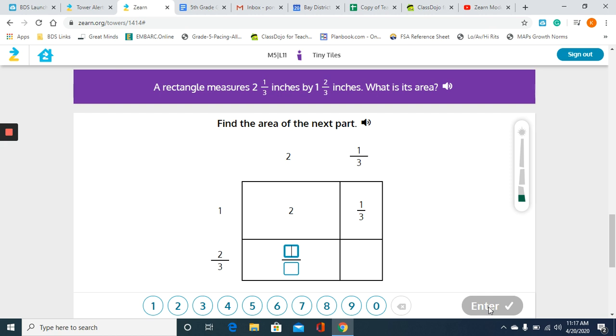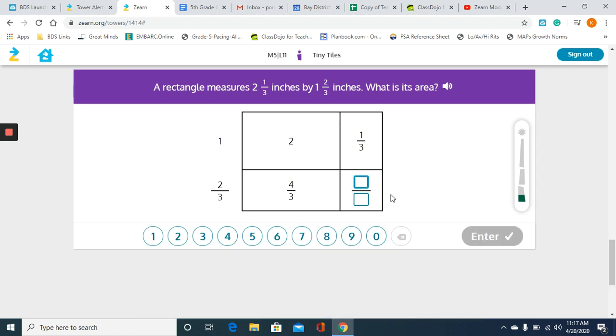Now we have 2 times 2/3. So just imagine that this is a 2 over 1. So 2 times 2 is 4, and then 3 times 1 is 3.